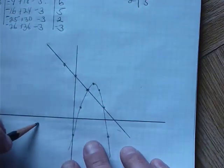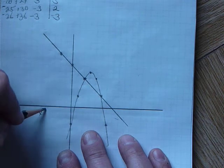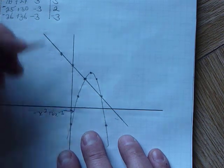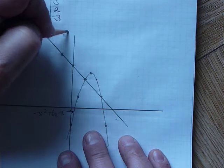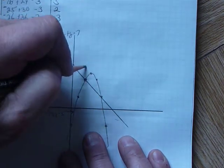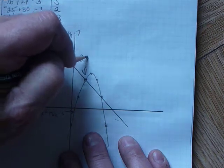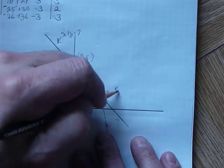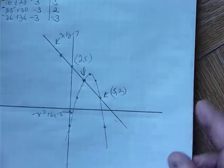And, we usually label these minus x squared plus 6x minus 3. That's my parabola. And, my line is x plus y is equal to 7. My solutions here are 2, 5. And, over here, guess what? This is 5, 2.